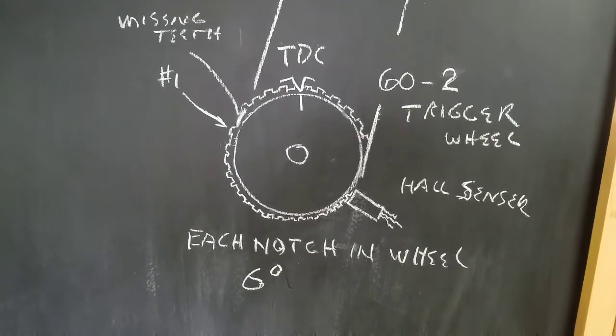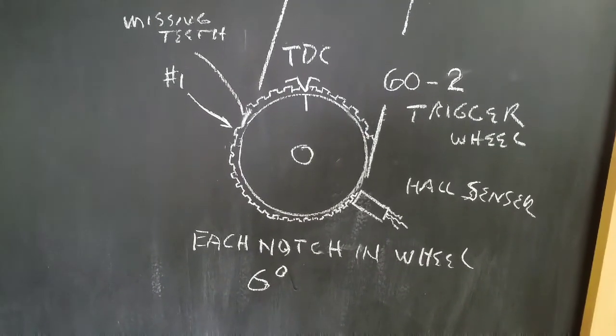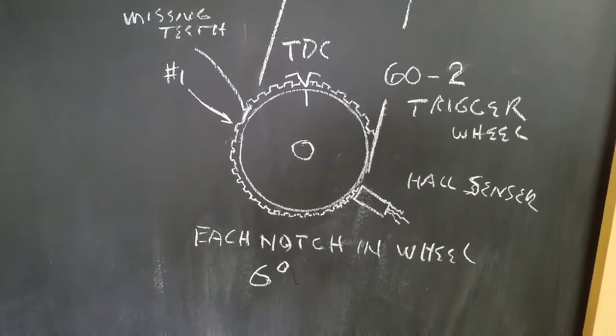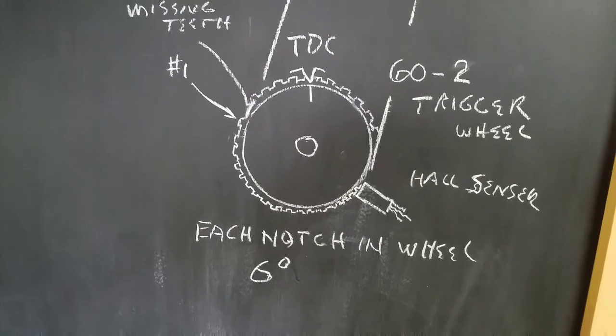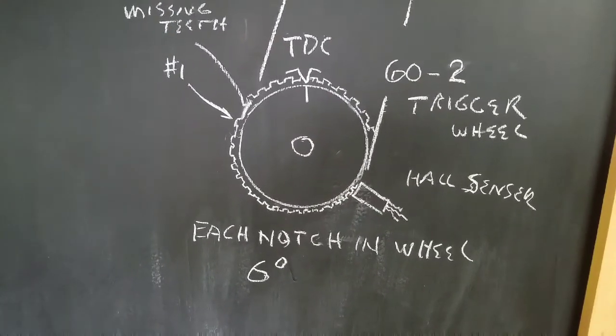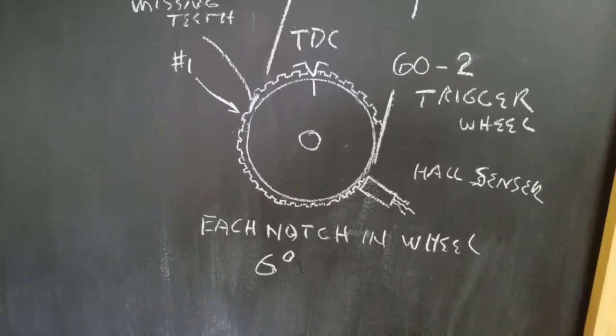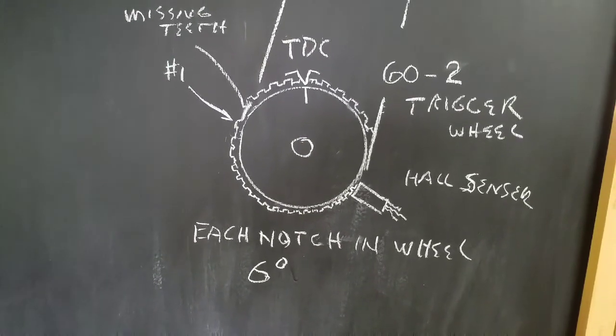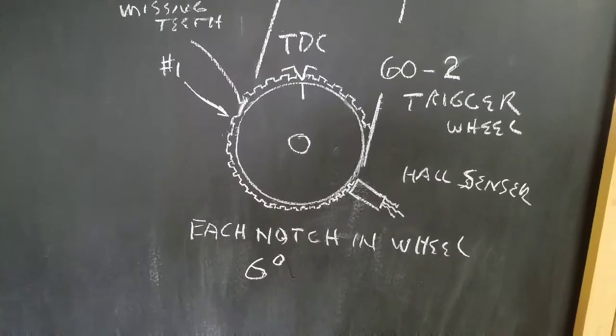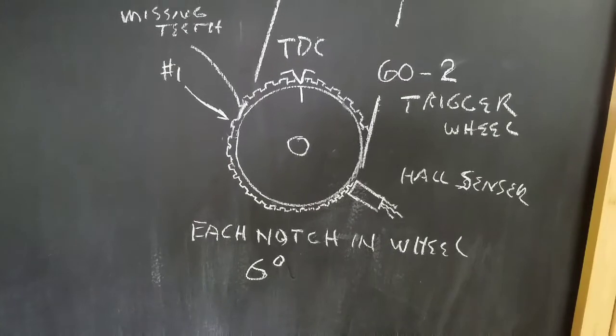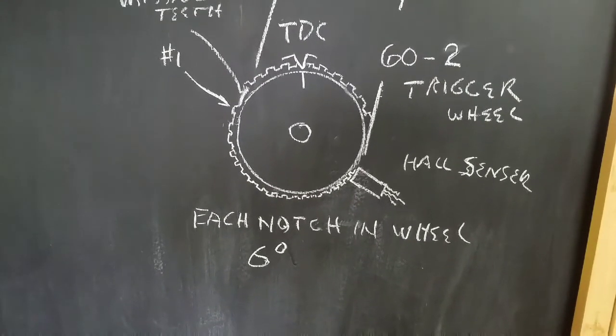Basically counterclockwise it's the first tooth, then you count the gaps all the way over to the hall sensor which is over on the lower right. Just multiply that by six degrees and you have your degrees that you put into your megasquirt configuration.